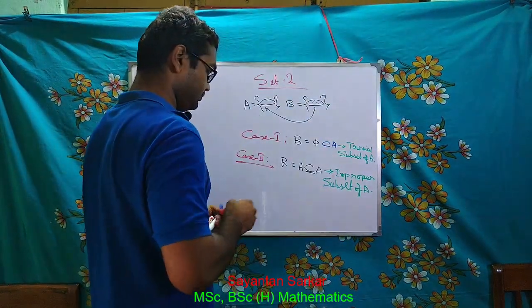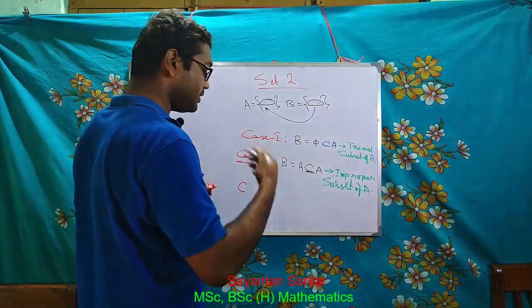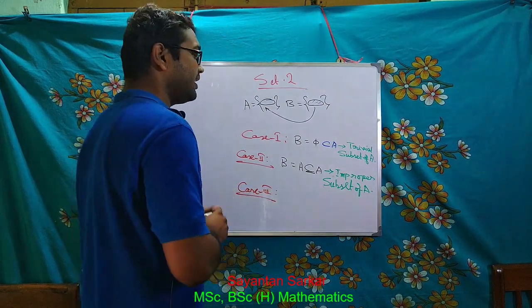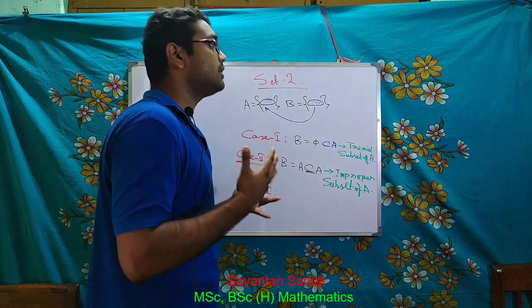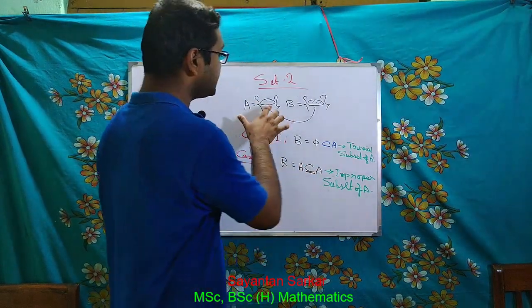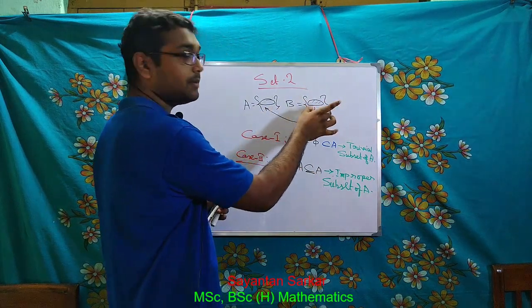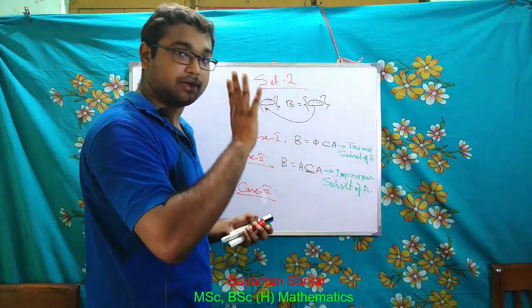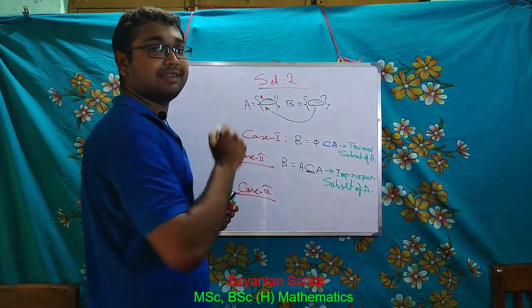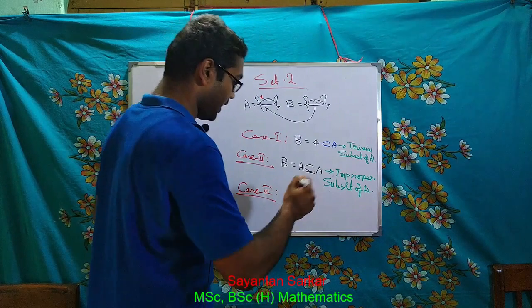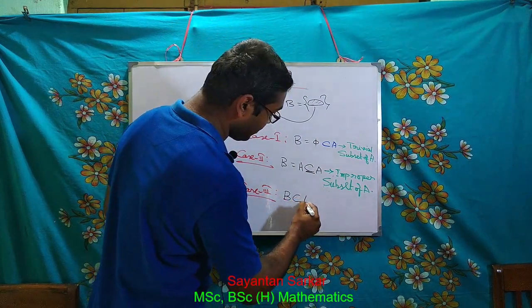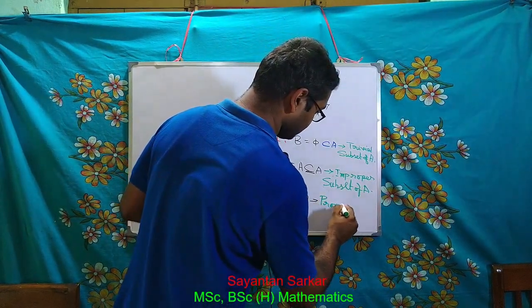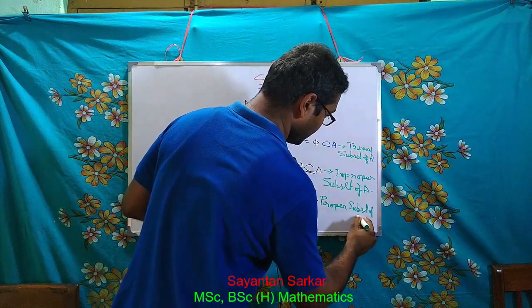The last case, as we can understand from the very name subset: A contains entire B, but after that, A still has some more elements. Even if A has one more element, then we say that B is properly contained in A, and it is known as the proper subset of A.